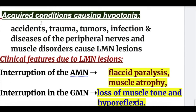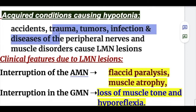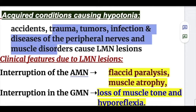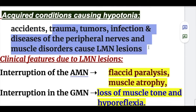Acquired conditions causing hypotonia include trauma, tumors, infection, diseases of the peripheral nerves, and muscle disorders such as myopathy and neuropathy — all causing lower motor neuron lesions.